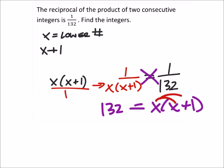From here, we can distribute the x, which gives us x squared plus x. This equals 132.